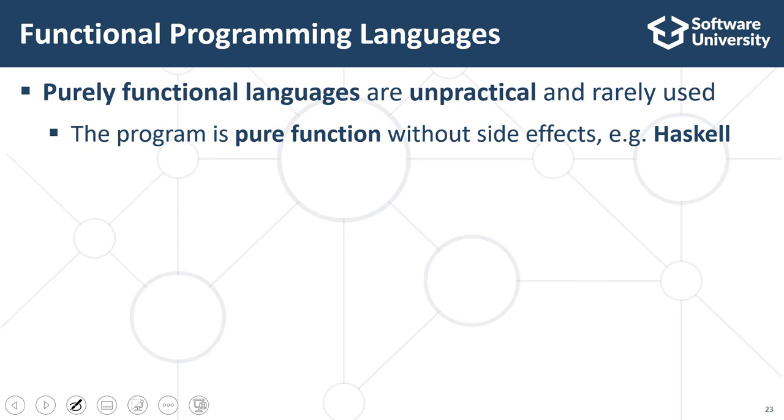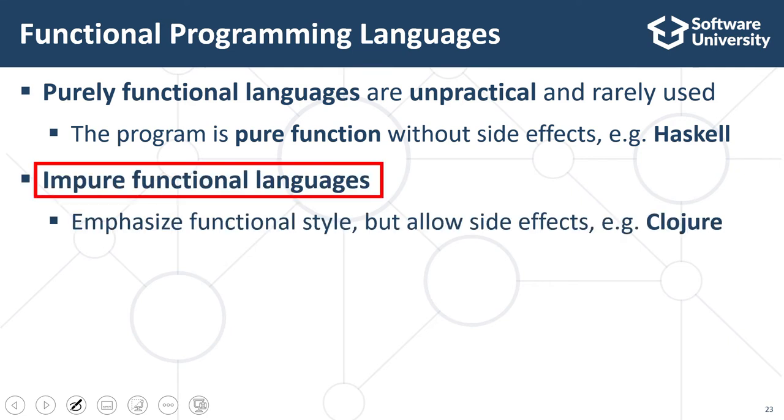An example of purely functional language is Haskell, which is not widely used in practice, but it has great value in learning the functional programming paradigms. Impure functional languages are used more often because they allow exceptions from the concept of pure functions, which simplifies the work of developers.